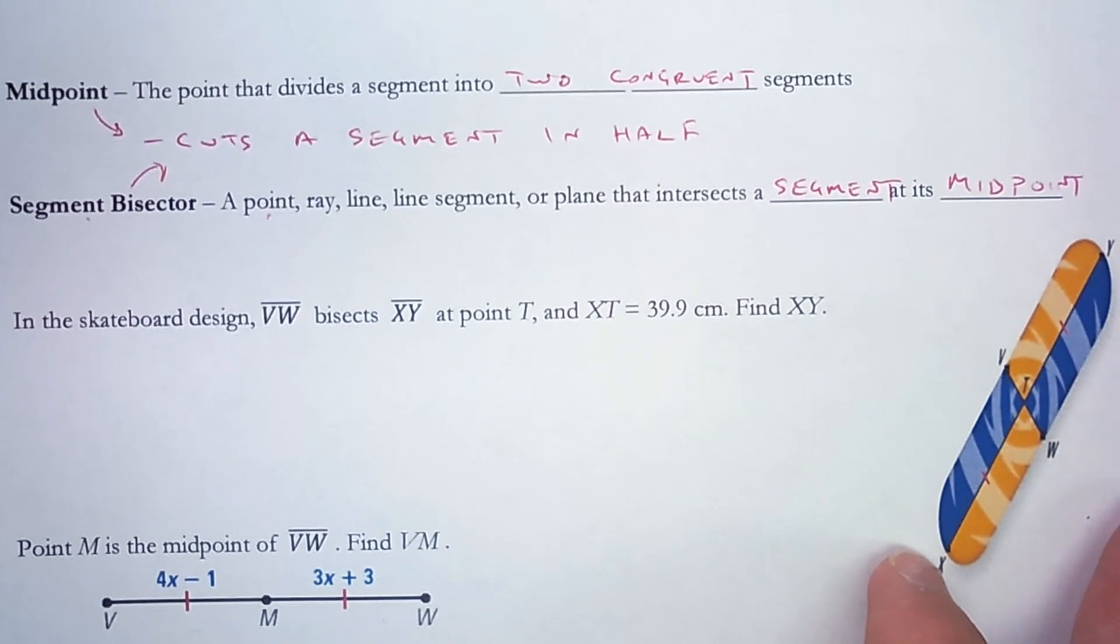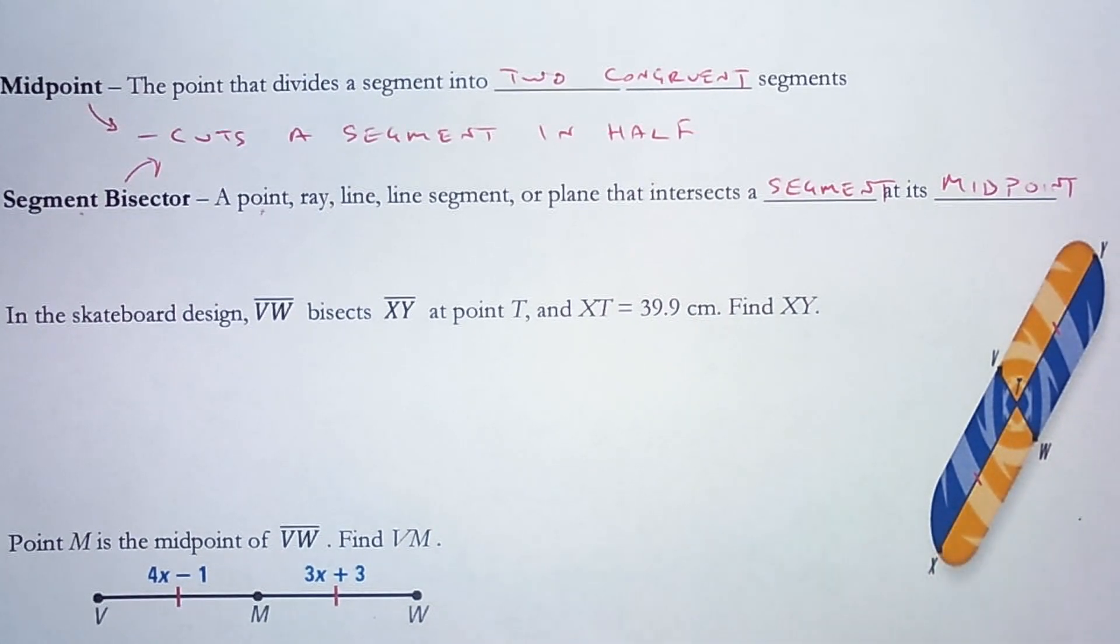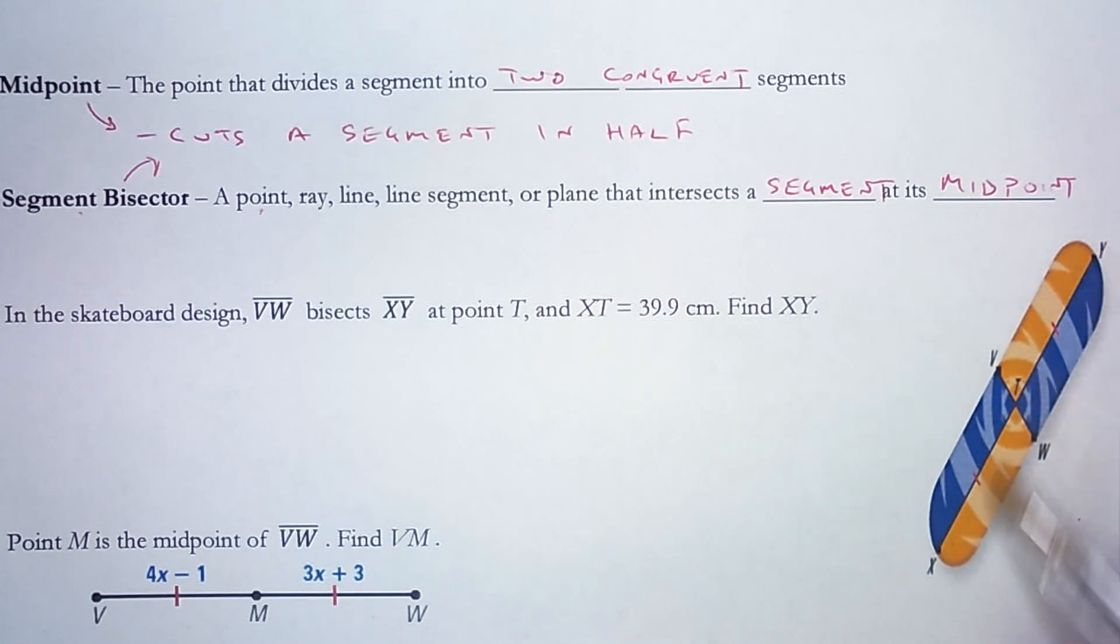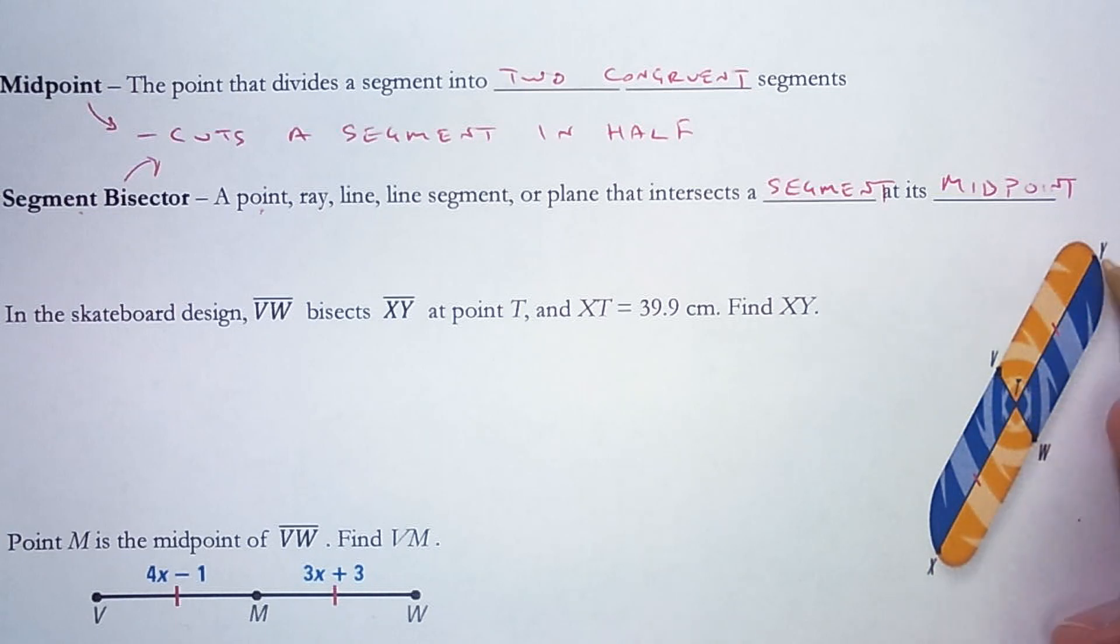So here is a skateboard design. In that design, segment VW, this one right here, bisects segment XY. So it cuts XY in half right here at point T. So point T is the midpoint. Now if this segment is bisected, if XY is bisected, that means XT and YT are the same, which is why it has these tick marks on it.